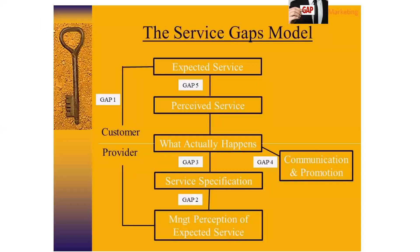Let's understand this model with a diagram. As mentioned, there are five GAPs: GAP 1, GAP 2, 3, 4, and 5. The first GAP relates to consumer expectation and management perception. The second is management perception and service quality expectation. The third GAP is service quality specifications and service delivery. The fourth is service delivery and external communications to consumers. The fifth GAP is expected service and perceived service.